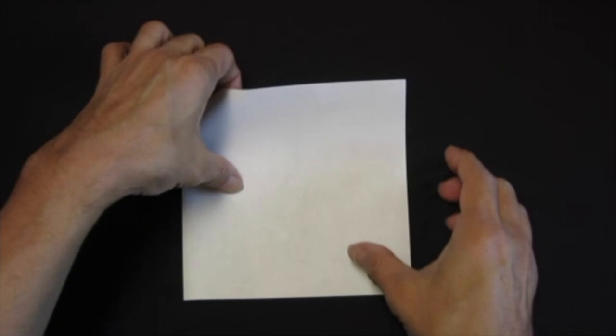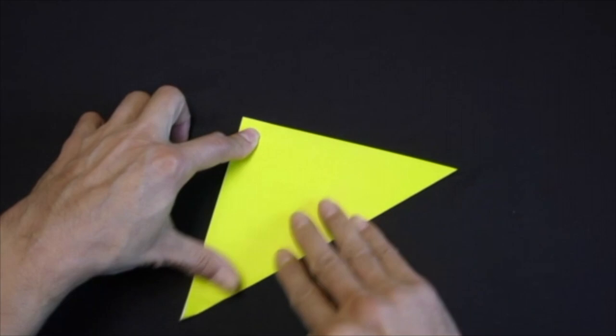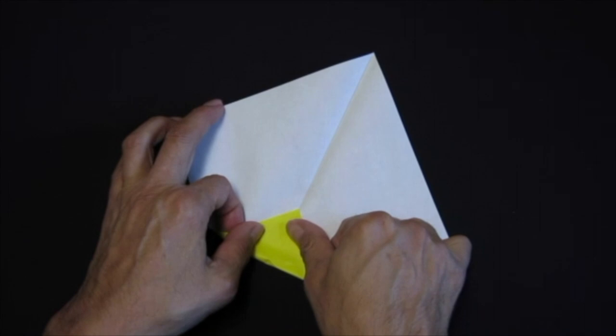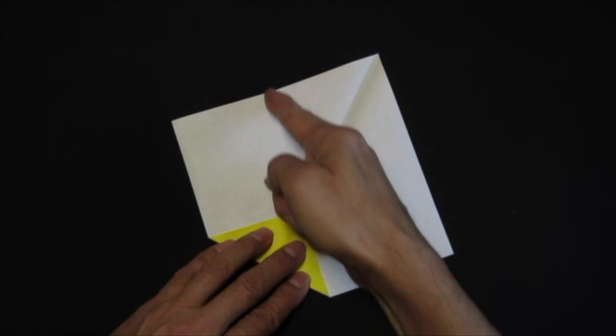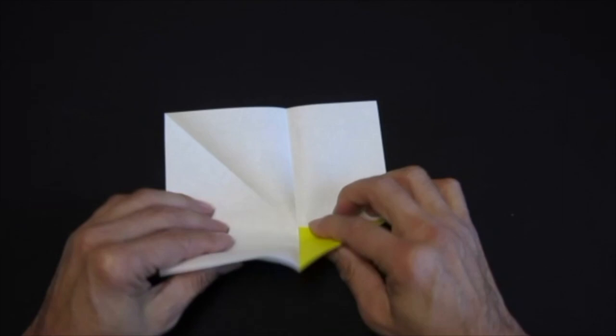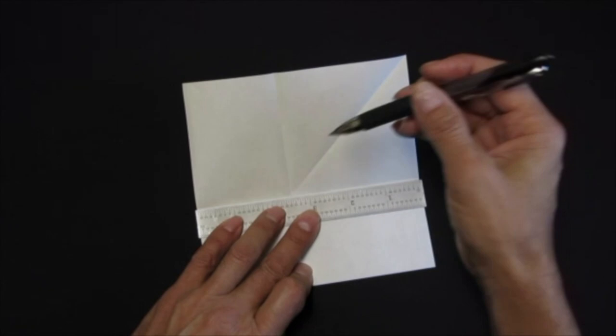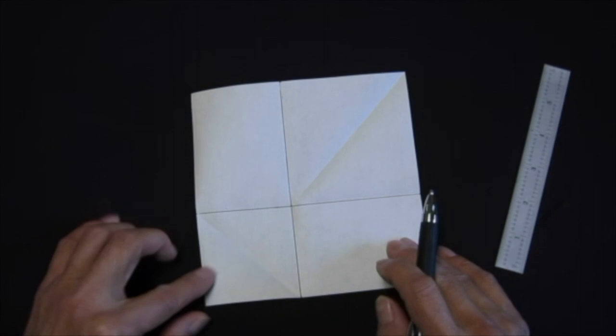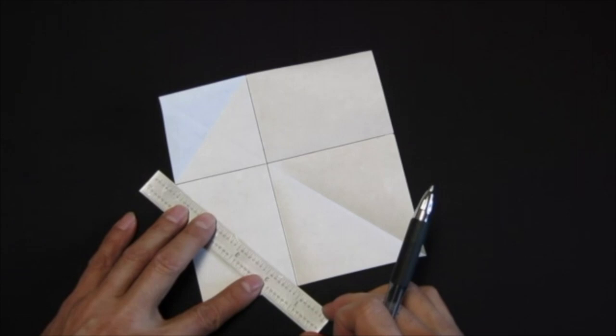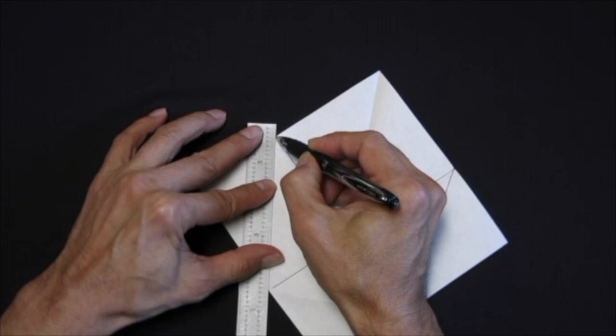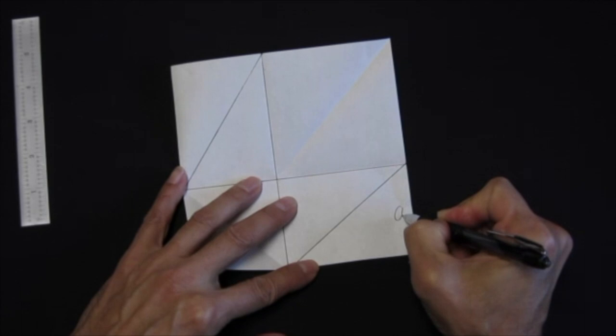Start from a square. Fold along the diagonal. Fold the tip to any point arbitrarily on the diagonal line. Fold along this edge and this edge. Highlight these two folds. We have two squares and two rectangles. The rectangle can be split into two right triangles.